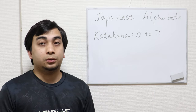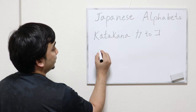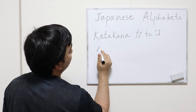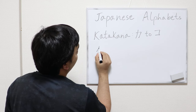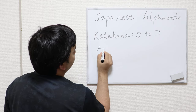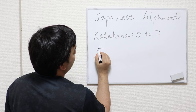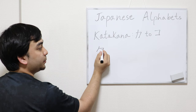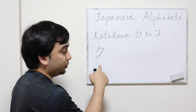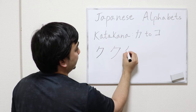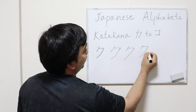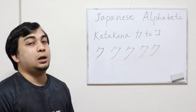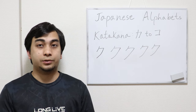Next is ku. In writing ku, what you're going to do is start with a curve from top to bottom curving left, and follow it with a horizontal line. Attached to it, follow by another curve from top to bottom, making an angle with the horizontal line. That's your ku. Write ku five to ten times, and pronounce it as you write.